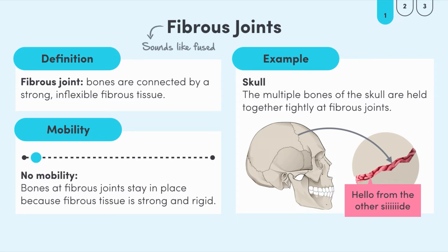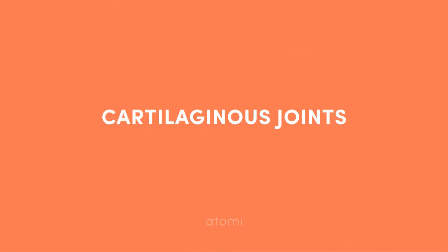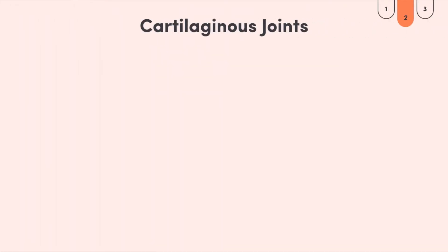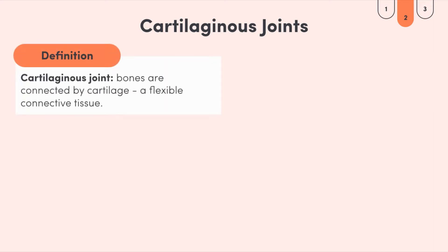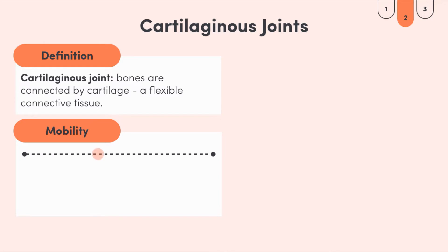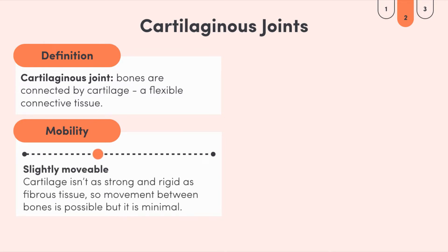The next major type of joint is cartilaginous joints, and again these are named based on how the bones are connected. Cartilaginous joints are connected entirely by cartilage, which is a flexible connective tissue. Cartilage is the bendy but hard stuff that your ears are made of, but we can also find it in other parts of our bodies such as joints. These joints have slightly more mobility than fibrous joints because cartilage is not as strong and rigid as fibrous tissue.